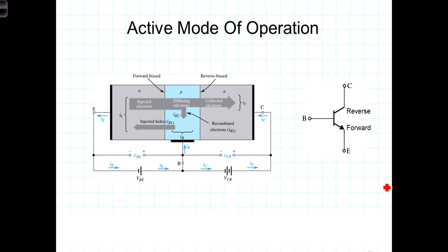When we qualitatively described the BJT transistor operation in a previous video, we described it with a forward biased base emitter junction and a reverse biased base collector junction. We now recognize this as the active region, or the linear region, of the BJT transistor.